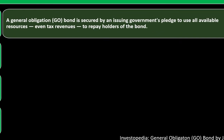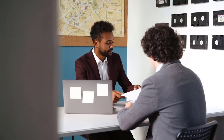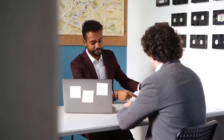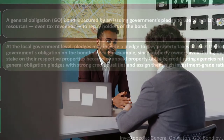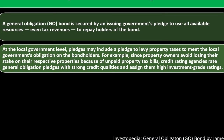Understanding general obligation bonds: a general obligation GO bond is secured by an issuing government's pledge to use all available resources, even tax revenue, to repay holders of the bond. This promise is only as good as the entity making it — you're hoping that because it's a municipality, it's a fairly secure promise and your return is secure to some degree. At the local government level, pledges may include a pledge to levy property taxes to meet the local government's obligations to bondholders.